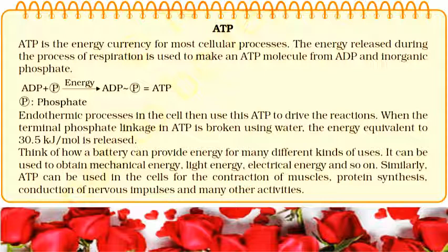The energy released during the process of respiration is used to make an ATP molecule from ADP and inorganic phosphate, as shown in the given image: ADP plus inorganic phosphate combines in the presence of energy to form ATP. P stands for phosphate group. When the terminal phosphate linkage in ATP is broken using water, the energy equivalent to 30.5 kilojoules per molecule is released.